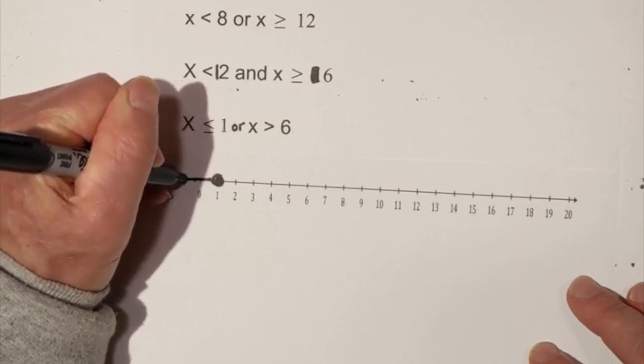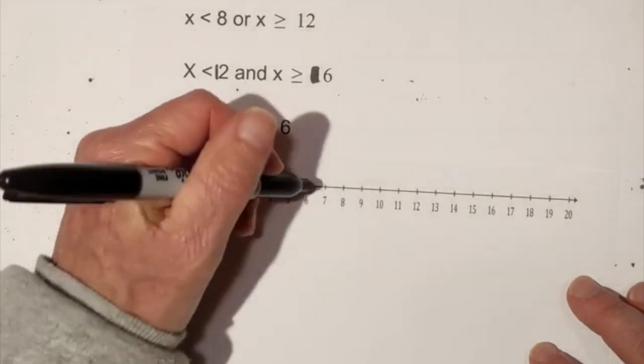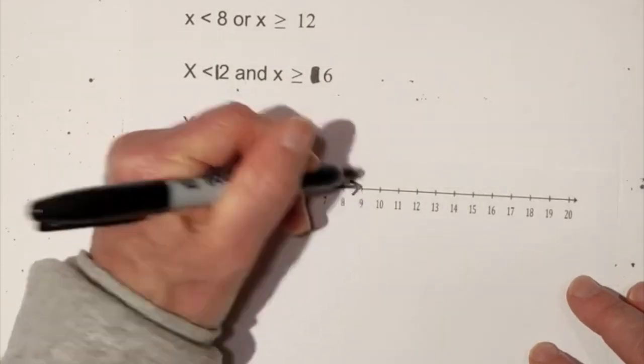Okay it goes in this direction, right, or it's going to be greater than 6. It's going to be open and greater than 6.